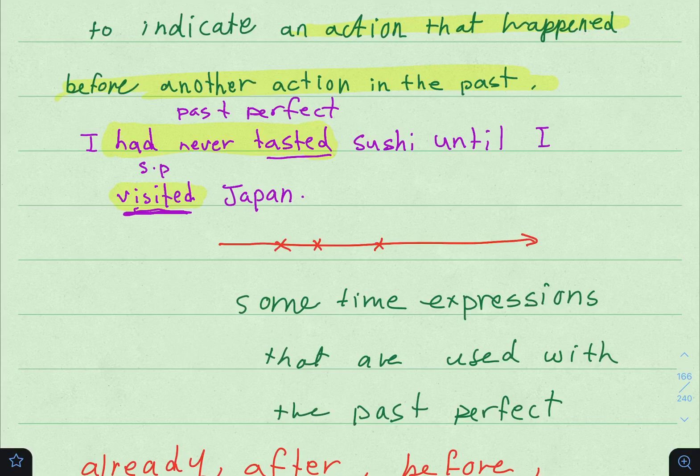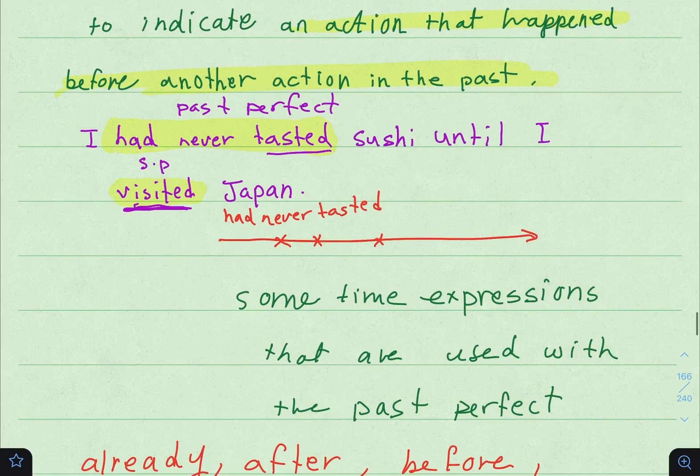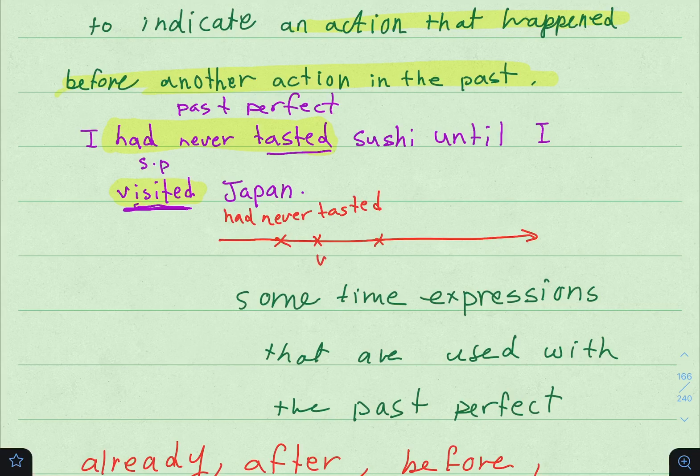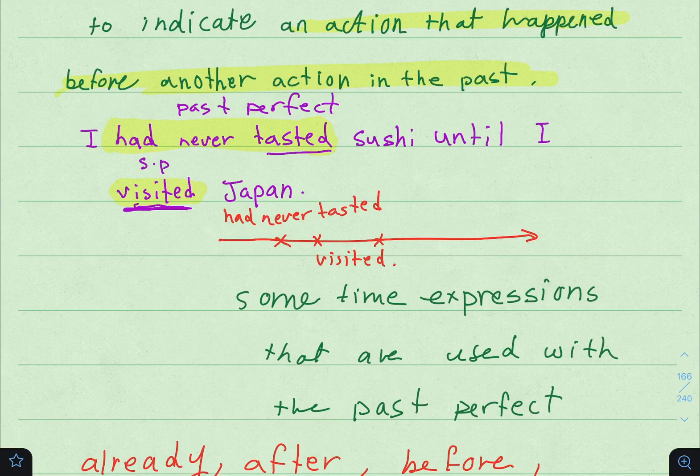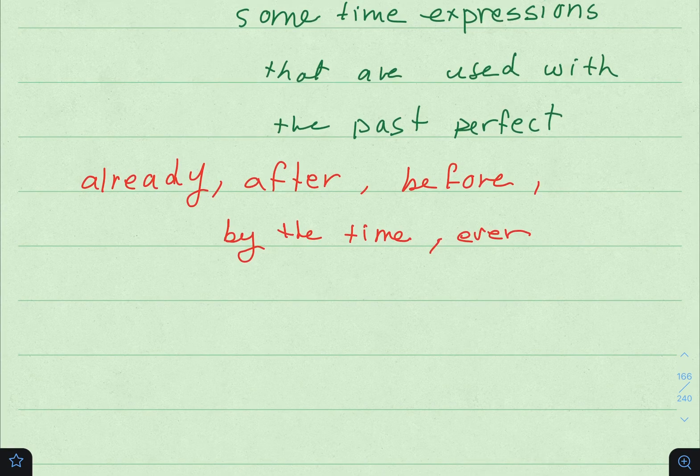Both actions happened in the past, but which one happened first? The one that happened first is 'had never tasted'. فالحدث اللي حصل قبل الماضي استخدمناه في Past Perfect.